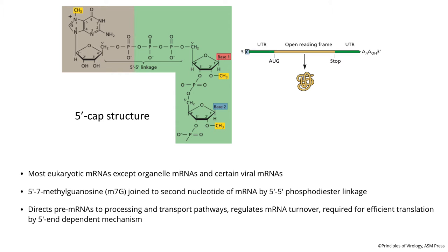These caps are found on most mRNAs in eukaryotic cells, though there are some exceptions — mitochondrial mRNAs are not capped, and certain viral RNAs are not capped. Yet the cap is very important for processing of mRNA, for transport out of the nucleus, it regulates degradation, and a cap is needed for efficient translation by a mechanism called 5'-end dependent initiation. So right away, some virus mRNAs do not have caps, and we have to figure out how to get efficient translation in their absence.